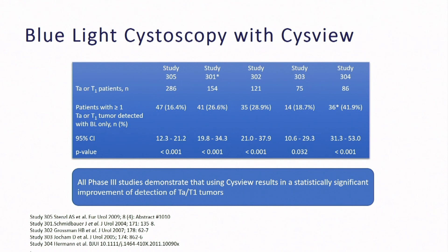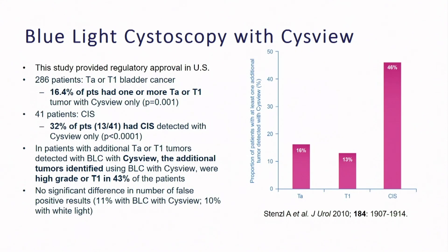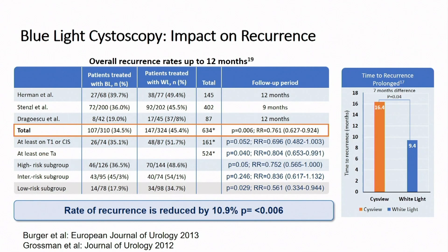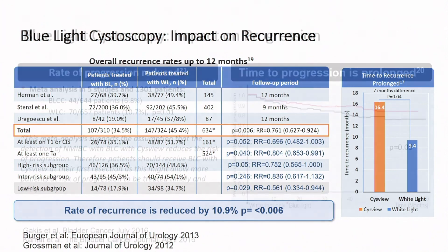Blue light cystoscopy in multiple studies has been shown to increase detection of both TA and T1 tumors by 20–30%, depending on the series. The US registry study that got CYSVIEW its approval showed about a 16% improvement in TA and T1 tumors and about 30% improvement in CIS detection. Of those additional tumors detected, almost half were high-grade or T1 — the type you would not want to miss. This increased detection has been shown to significantly reduce recurrence risk and delay time to recurrence by about seven months.